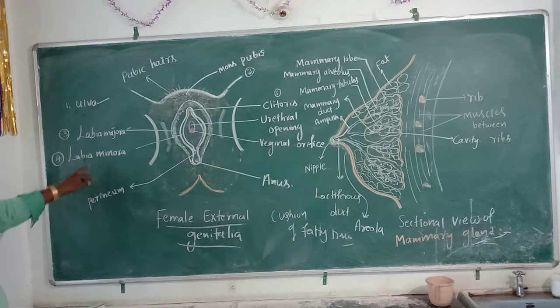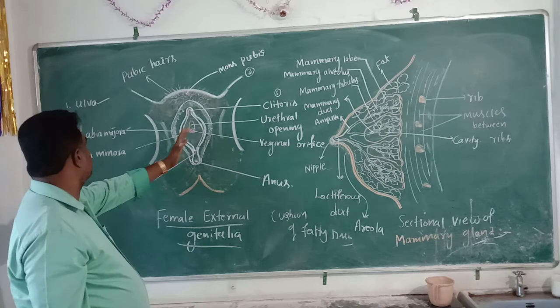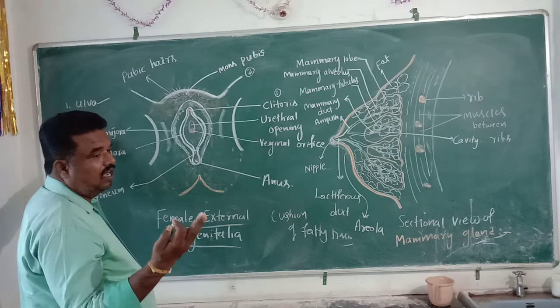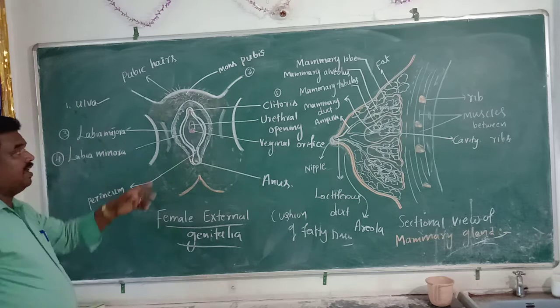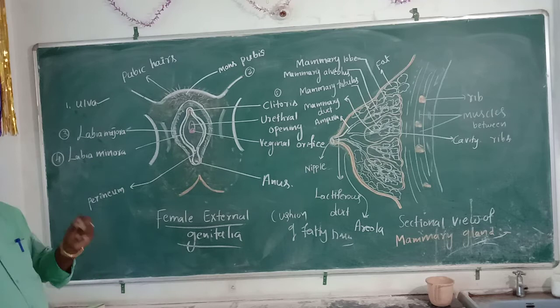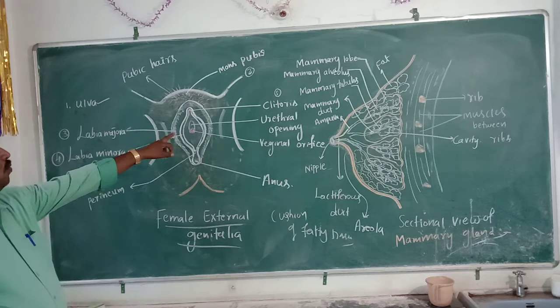Labia minora is a pair of fleshy folds present just below the labia majora, surrounding the vaginal opening or vaginal orifice. These are called as labia minora.